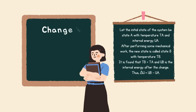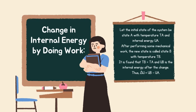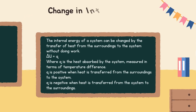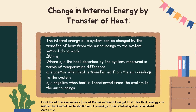Change in internal energy by doing work: let the initial state of the system be state A with temperature T_A and internal energy U_A. After performing some mechanical work, the new state is called state B with temperature T_B. It is found that T_B is greater than T_A and U_B is the internal energy after the change. The internal energy of a system can also be changed by the transfer of heat from the surroundings to the system without doing work: ΔU equals Q, where Q is the heat absorbed by the system measured in terms of temperature difference.